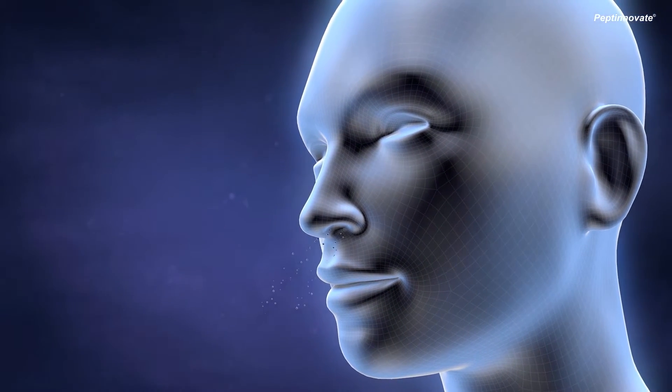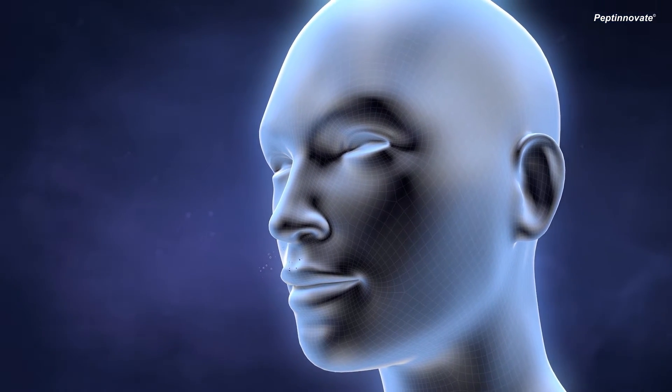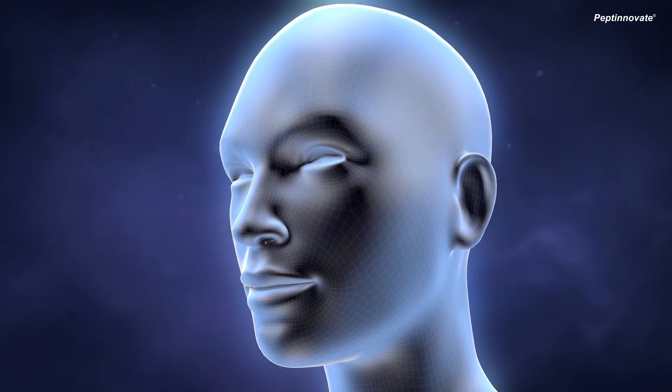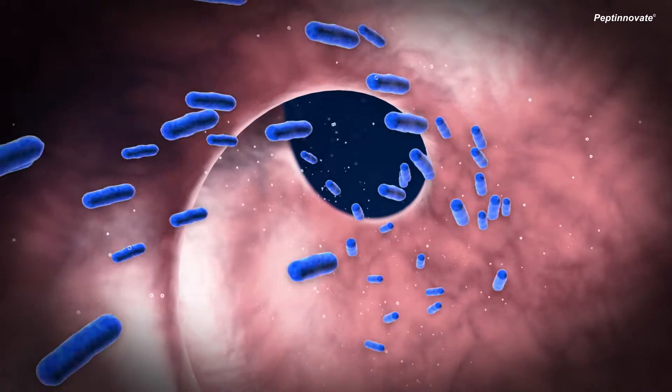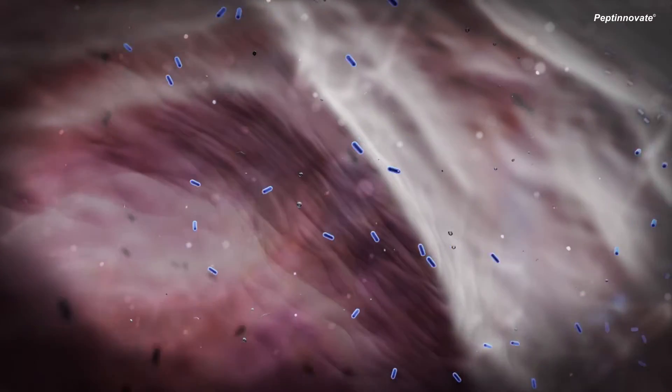In humans, the TB bacteria are inhaled via the mouth and nose through the airways into the lung, where they settle and multiply.